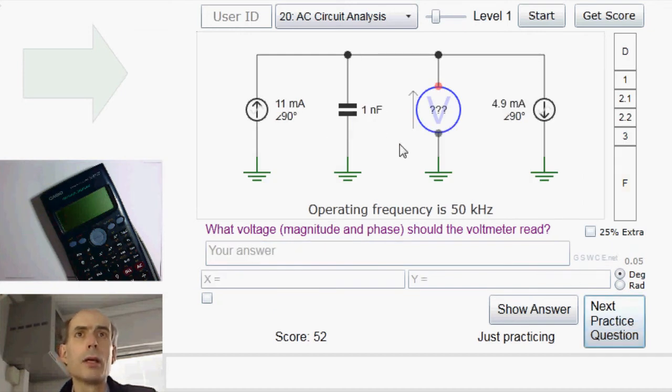Right, here, similar idea. We have an 11 milliamp current flowing this way and a 4.9 milliamp current flowing this way. No current can be flowing through the voltmeter, so the difference between these two currents must be flowing through the 1 nanofarad capacitor. Well, Kirchhoff's current law applied to this point in the circuit here. The total ingoing current is 11 milliamps at 90 degrees. The total outgoing current is 4.9 milliamps at 90 plus the current through this capacitor.